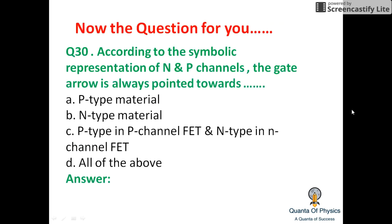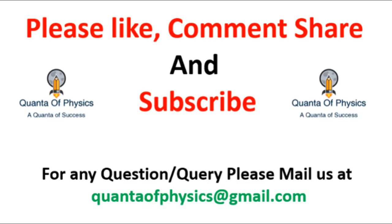Question for you: According to the symbolic representation of N and P channel FETs, the gate arrow is always pointed toward the P-type material. In an N-channel FET the arrow points toward the N-type material, and in a P-channel FET the arrow points toward the P-type material.